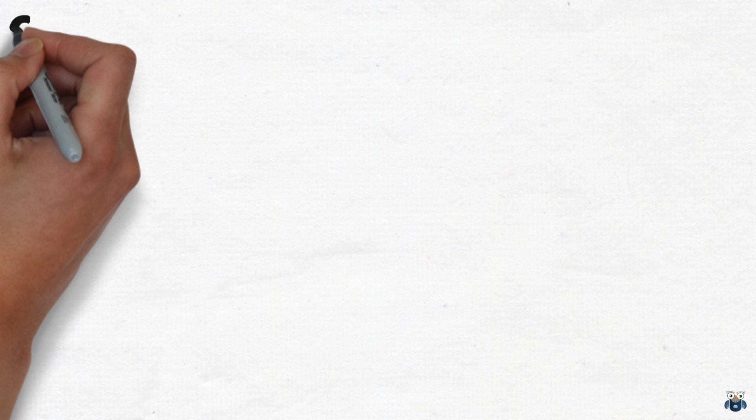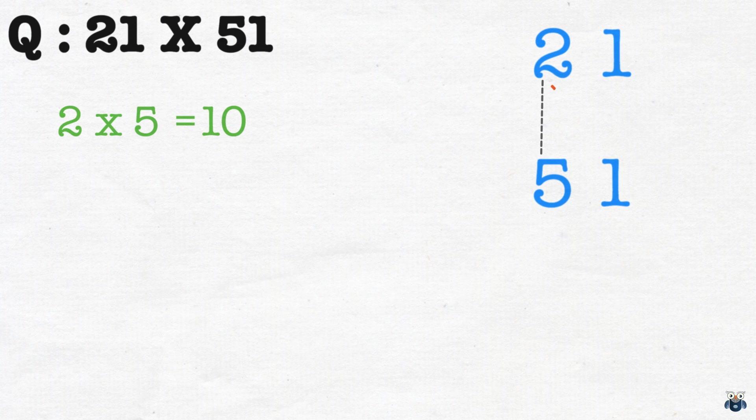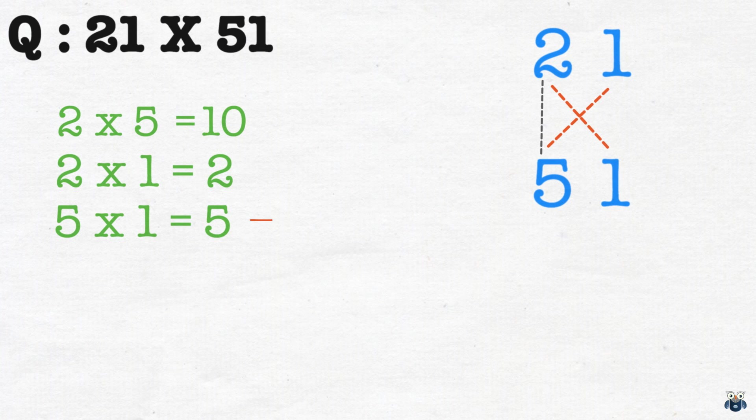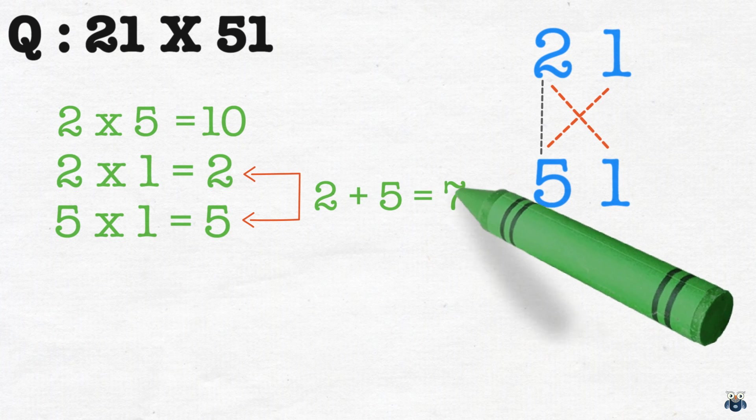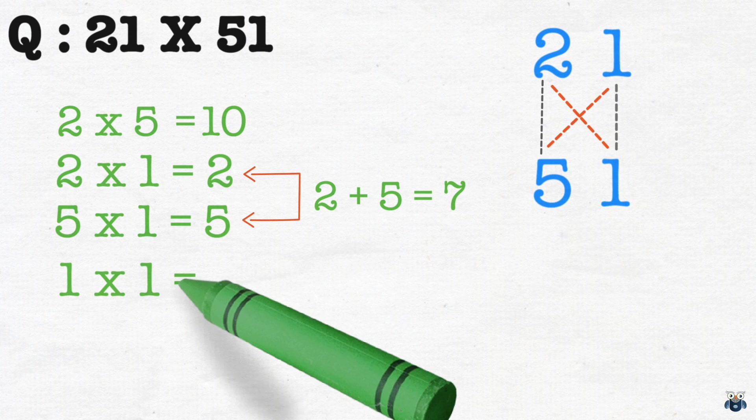Let's try another example. What is 21 times 51? We write down both numbers. Starting from the left, we first connect the numbers vertically and find their product. So 2 into 5 is 10. Now we move crosswise and multiply the numbers. 2 into 1 is 2 and 5 into 1 is 5. We add both results. 2 plus 5 is 7. Finally, moving to the extreme right, we connect the numbers vertically and find their product.